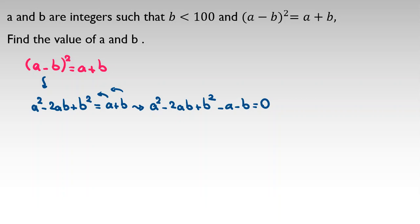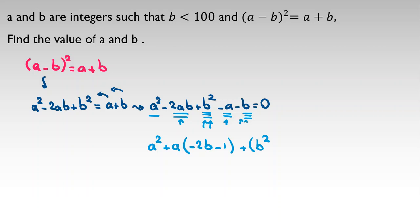I want to treat this equation as a quadratic function in terms of A. So if I consider that, it is degree 2 in A, degree 1 in A, and a constant term. So I can say A squared plus A times negative 2B minus 1, plus the constant term B squared minus B equals 0.